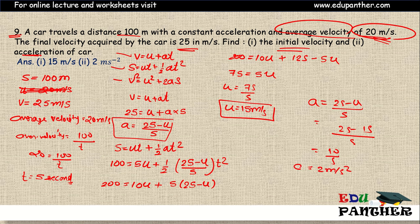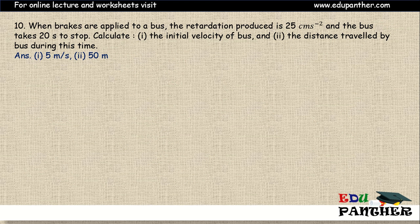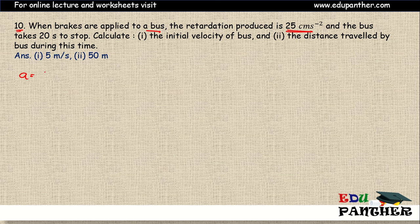Now calculating acceleration using a = (25 - u) / 5 = (25 - 15) / 5 = 10/5 = 2 meters per second squared. So the acceleration is 2 m/s². Sometimes one formula is not enough and we need to use a second formula as well. Now moving to question number 10: when brakes are applied to a bus, the retardation produced is 25 centimeters per second squared.